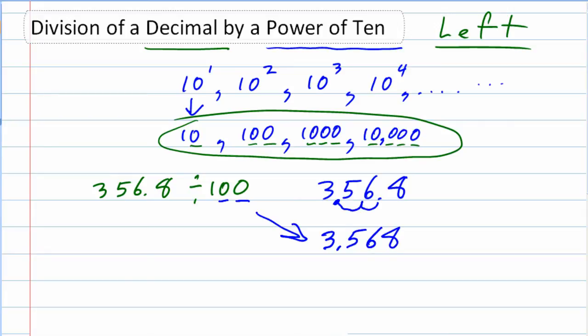So we moved it two digits because of the two zeros. We moved it to the left because when we divide, we make things smaller.